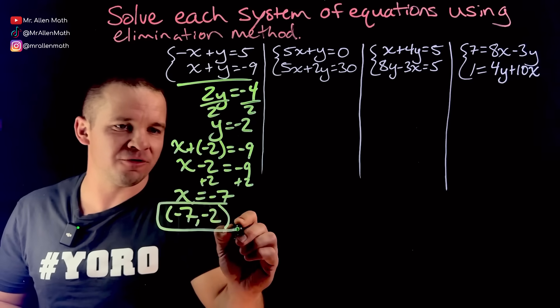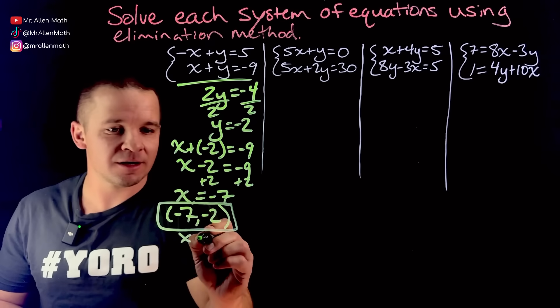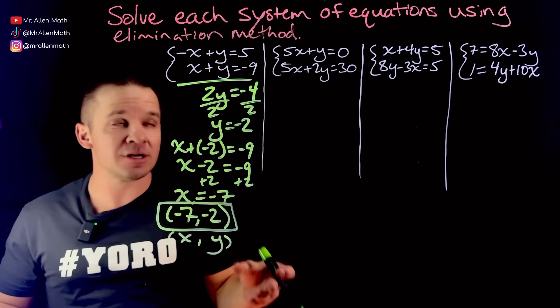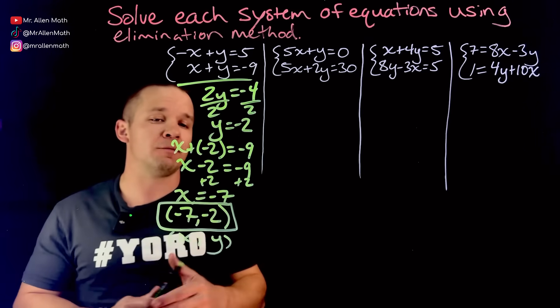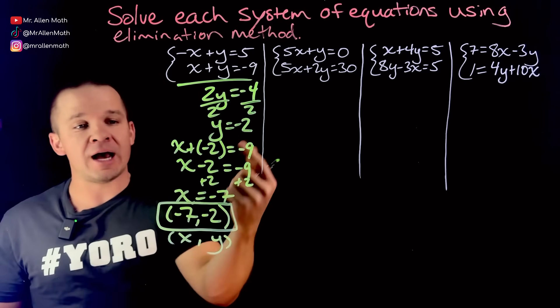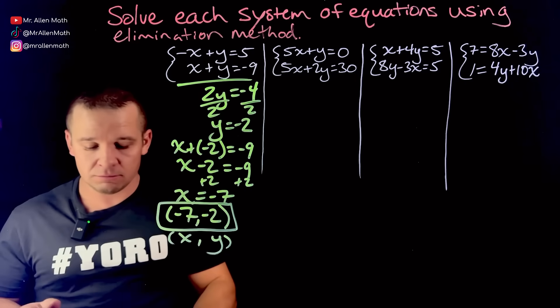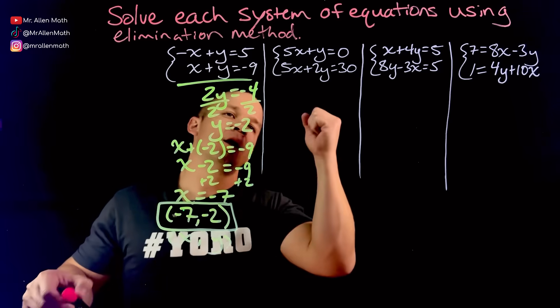So my answer here is negative seven comma negative two. Boom, beautiful. It is x comma y for our ordered pair. Every answer for a system of equations, of linear equations here, two variables, it's going to be an ordered pair, x comma y. In this case, negative seven comma negative two. Cool, awesome, lovely. Keep on moving.